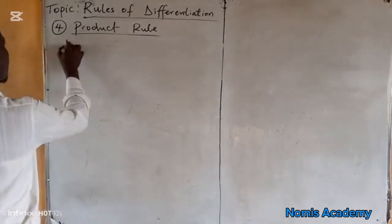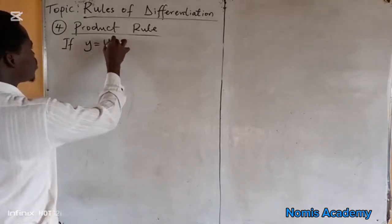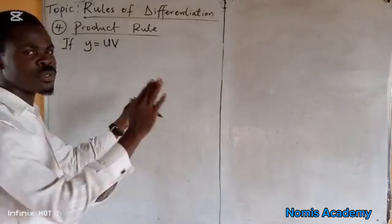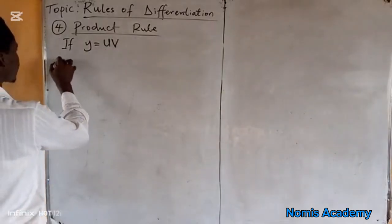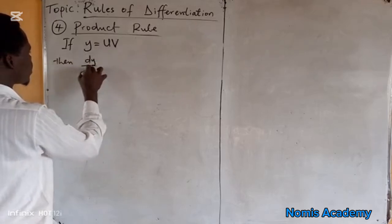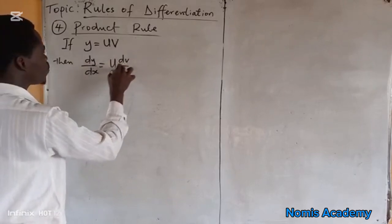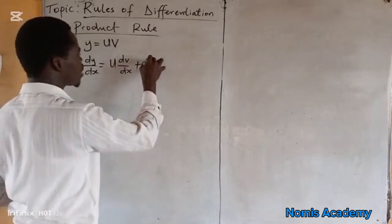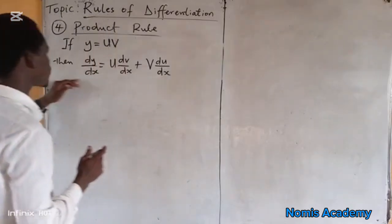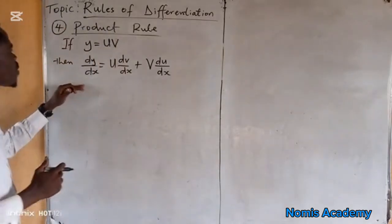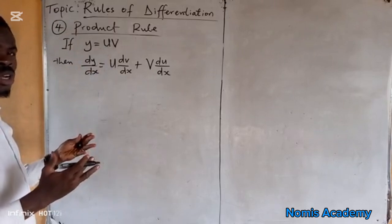When y is a function of the variable, where u and v are separate functions, then the derivative dy over dx is given as u multiplied by dv over dx plus v multiplied by du over dx. So this is the product rule. We use this in solving functions where you have two separate functions that are products of themselves.